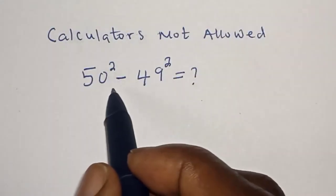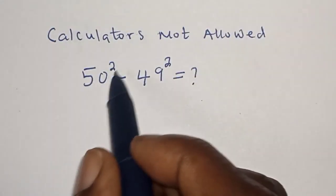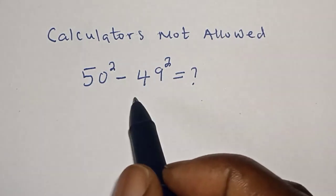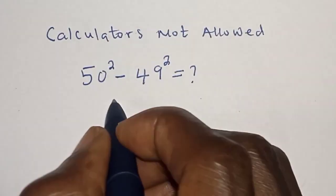Hello, welcome to Magis. In this class we want to simplify this nice question: 50 squared minus 49 squared is equal to what? Remember, calculators not allowed. Solution: